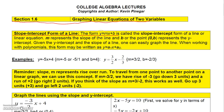We're going to assume that x is the independent variable and y is the dependent variable. We'll have some applications where we might use different variables, but most of the time we'll use x and y. In slope-intercept form, m represents the slope of the line and b, the constant, represents the y-intercept — the point (0, b). Given the y-intercept and the slope, you can easily graph the line.